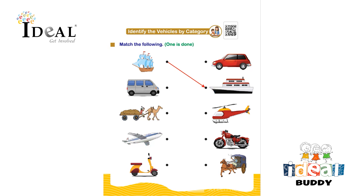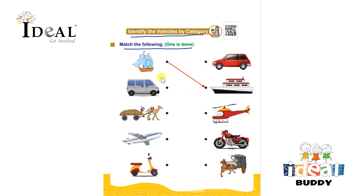Hello everyone. In this worksheet the topic is identify the vehicles by their category. Match the following — one is done. So the child has to connect the water vehicle with the water vehicle, road vehicle with the road vehicle. One is done for them to refer.